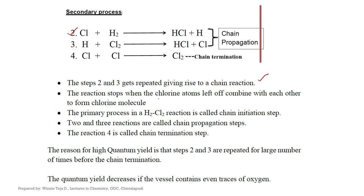The reaction stops when the chlorine atoms combine with each other to form a chlorine molecule. The primary process is called the chain initiation step; reactions 2 and 3 are called chain propagation steps; and reaction 4 is called the chain termination step. The reason for the high quantum yield of this reaction is that steps 2 and 3 are repeated a large number of times before chain termination.